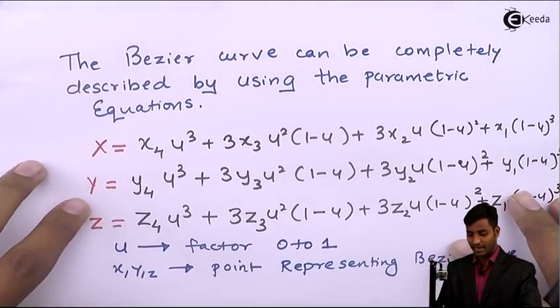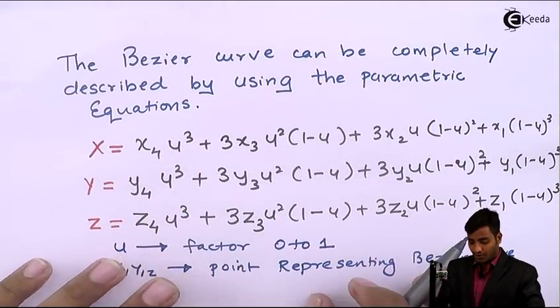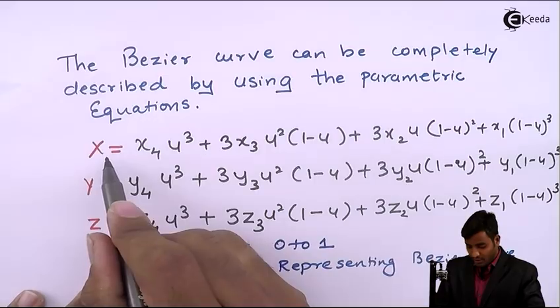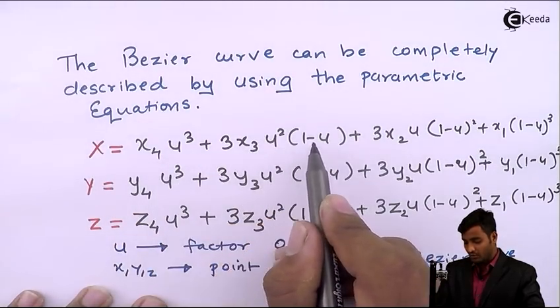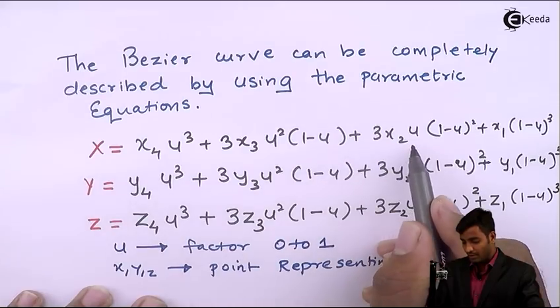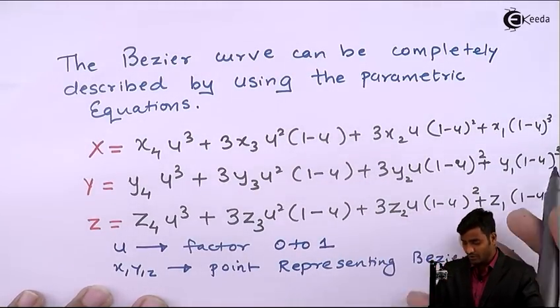Bezier curve can be completely described using parametric equations, where X = X₄u³ + 3X₃u²(1-u) + 3X₂u(1-u)² + X₁(1-u)³, and similarly for Y and Z.